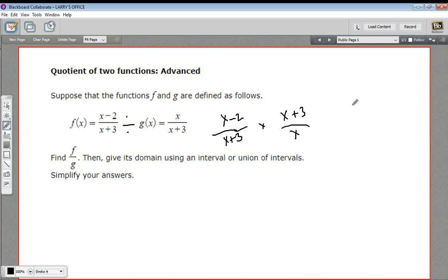And as you can see, something really nice happens here. We can cancel the x plus 3, and we just get x minus 2 over x. So we really had hardly any work to do at all. This is our quotient.